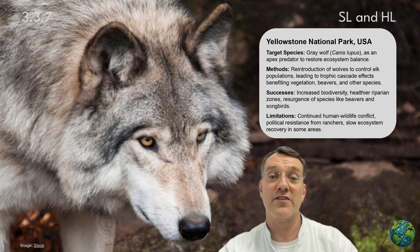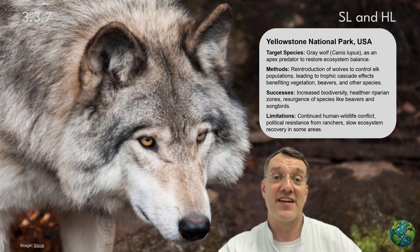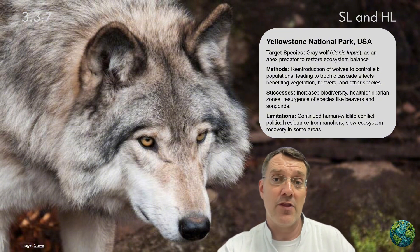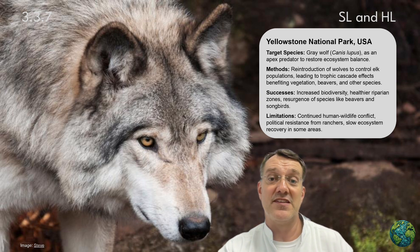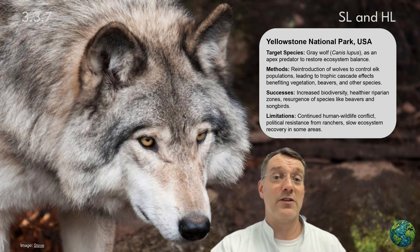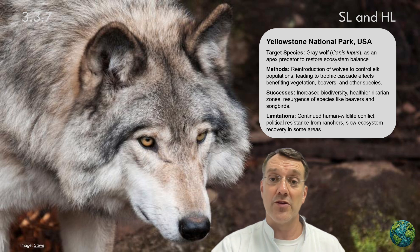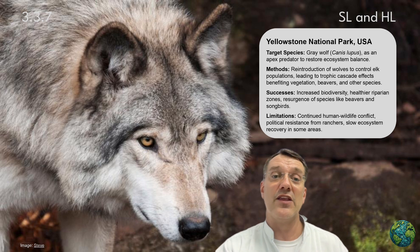The Yellowstone National Park Rewilding Project in the USA targeted the gray wolf as an apex predator to restore ecosystem balance. Reintroducing wolves controlled elk populations and led to trophic cascades benefiting vegetation, beavers, other species, and even the flow of water within Yellowstone. Successes included increased biodiversity, healthier riparian zones, and the resurgence of species like beavers and songbirds. Limitations include continued human-wildlife conflict with farmers and ranchers, political resistance, and slow ecosystem recovery in some areas.